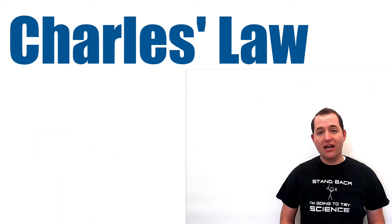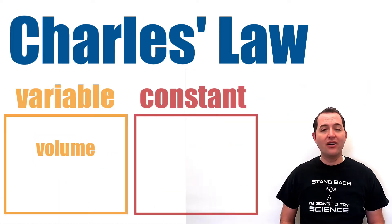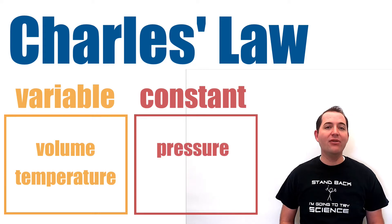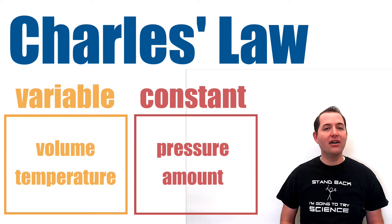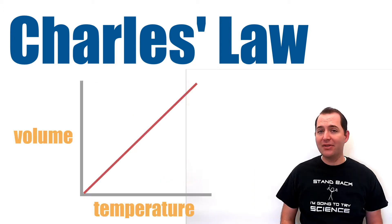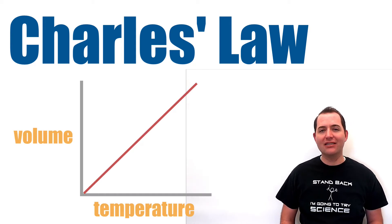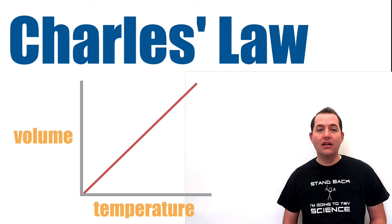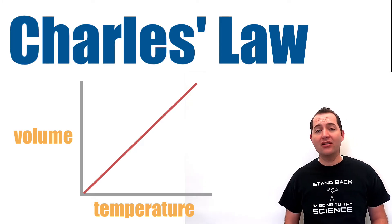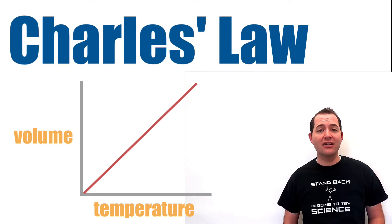Charles's law is a gas law that relates volume and temperature. If we keep pressure and the amount of gas constant, then volume and temperature are directly proportional. As the temperature increases, the volume will increase as well, and as the temperature decreases, so will the volume. As you heat a gas, the particles move faster and the gas expands or takes up more space.